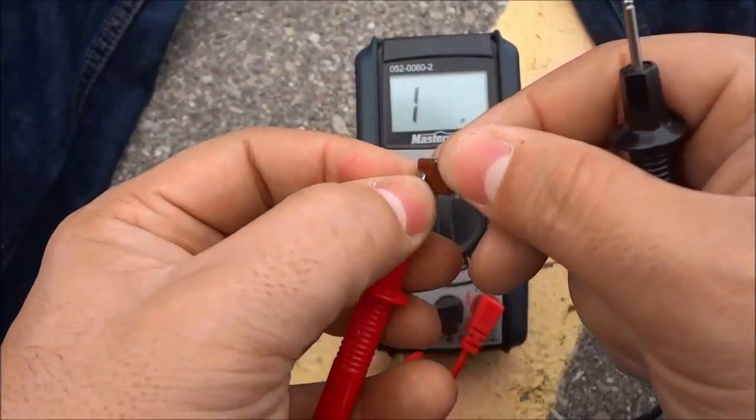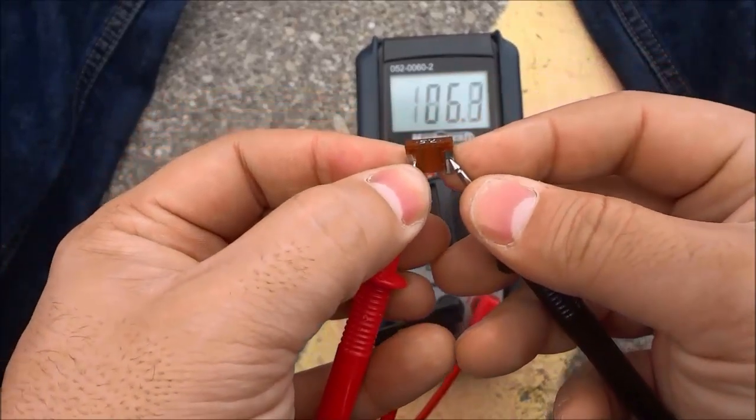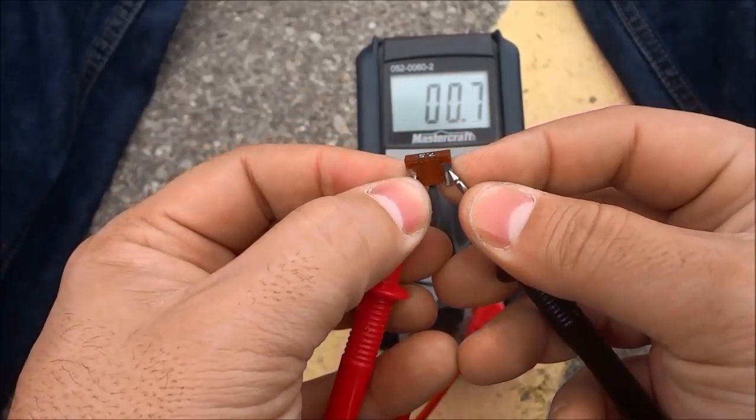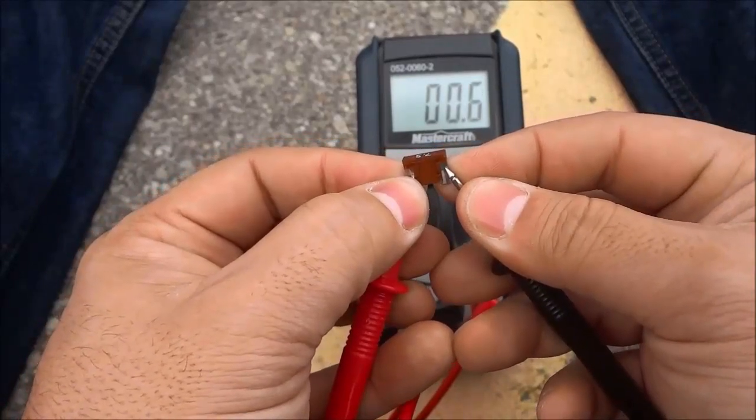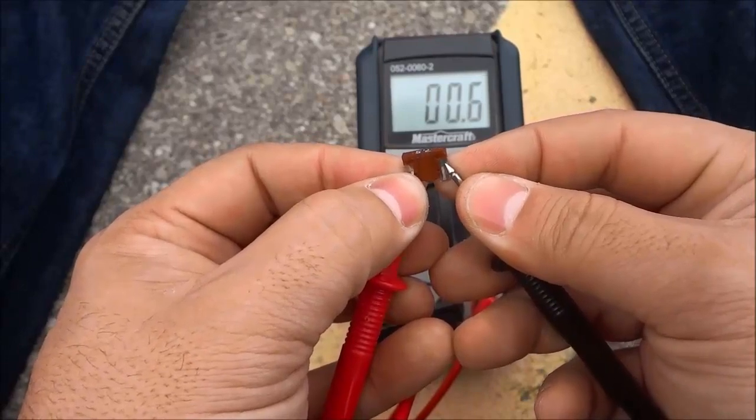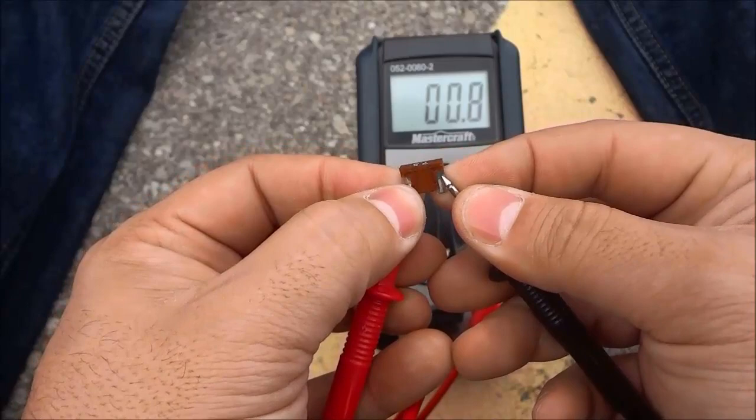So I'm just going to touch the terminals to the sides of the car fuse and hold them there and we should see a number that is zero or close to zero. And once again we are seeing a number that is close to zero, 0.6 right now, which means that there is continuity in the car fuse and that means the car fuse is good.